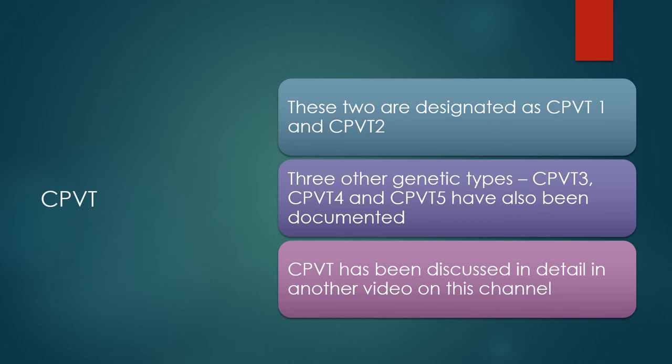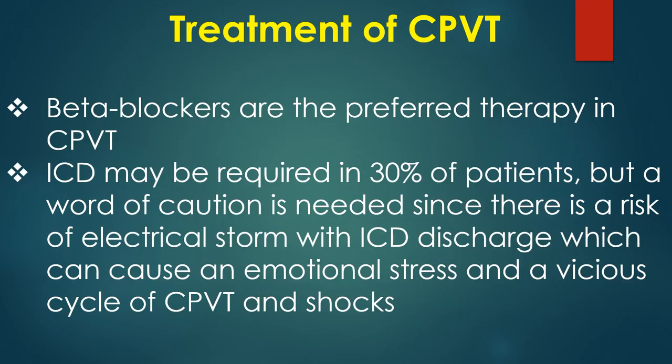Three other genetic types, CPVT3, CPVT4, and CPVT5, have also been documented and discussed in detail in another video. Beta blockers are the preferred therapy in CPVT. ICD may be required in 30% of patients, but caution is needed since there is a risk of electrical storm with ICD discharges, which can cause emotional stress and a vicious cycle of CPVT and shocks.